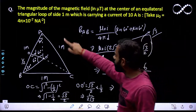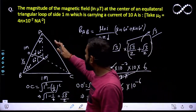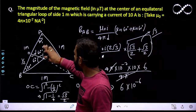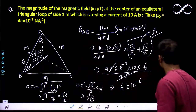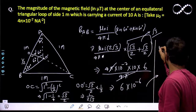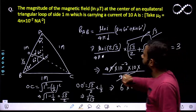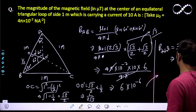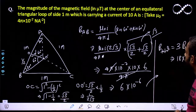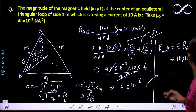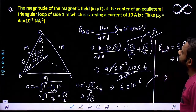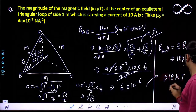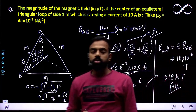Since all three sides are symmetrical with respect to this center, the total magnetic field due to the whole equilateral triangle will be 3 times the magnetic field due to one side. So B_total = 3 × B_AB = 18 × 10⁻⁶ Tesla. All units are in the SI system, so the result is in Tesla. The answer is 18 micro Tesla. I hope you understood this question.